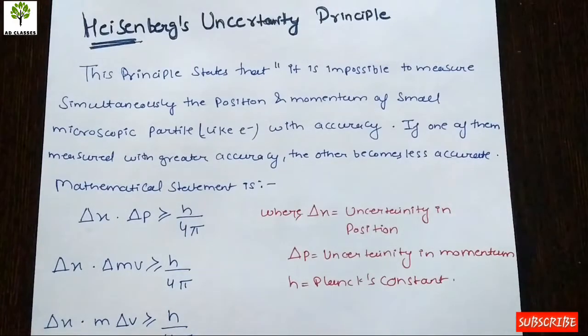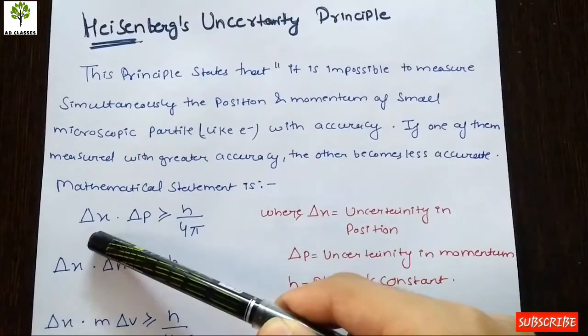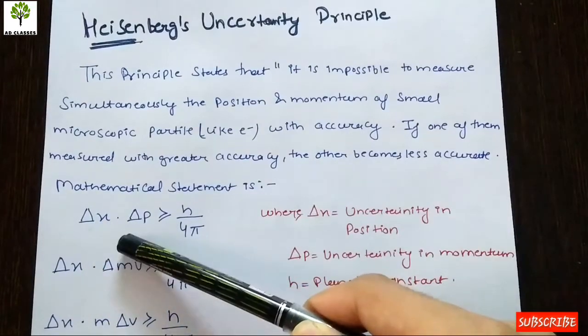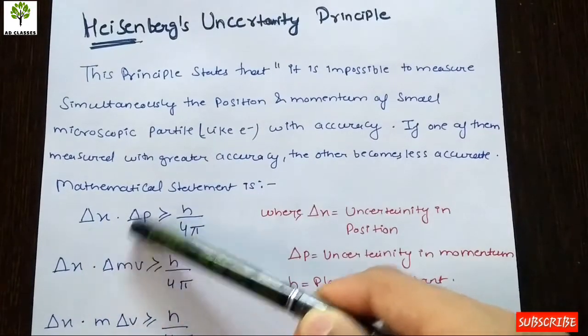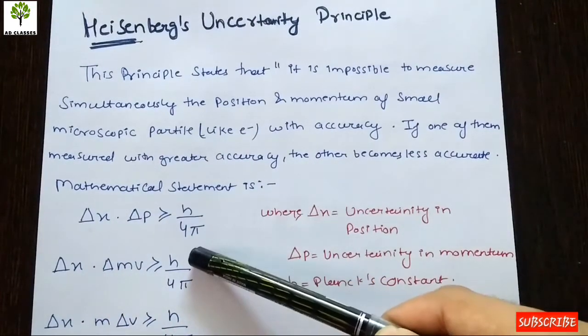If we look at the mathematical statement, it is: delta x multiplied by delta p is greater than or equal to h upon 4 pi.